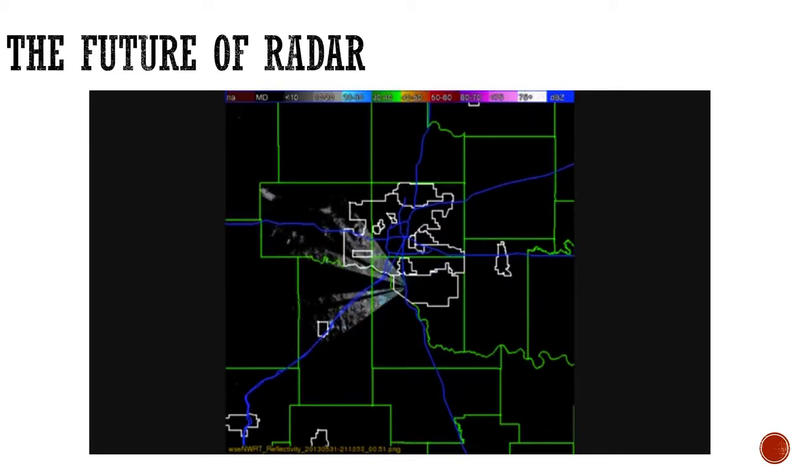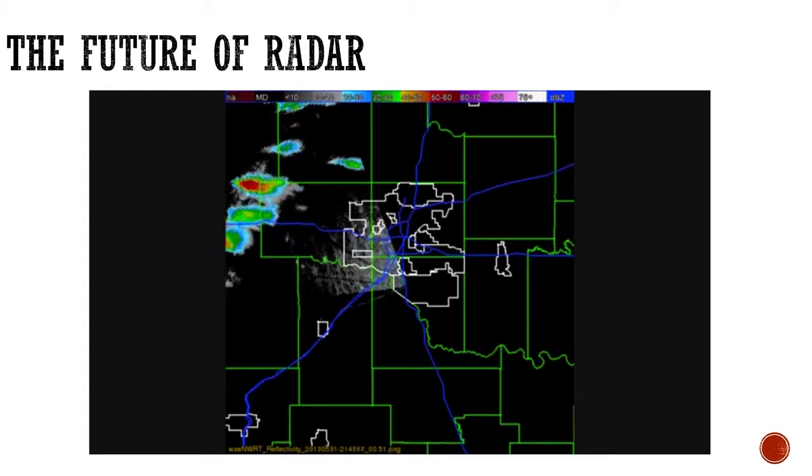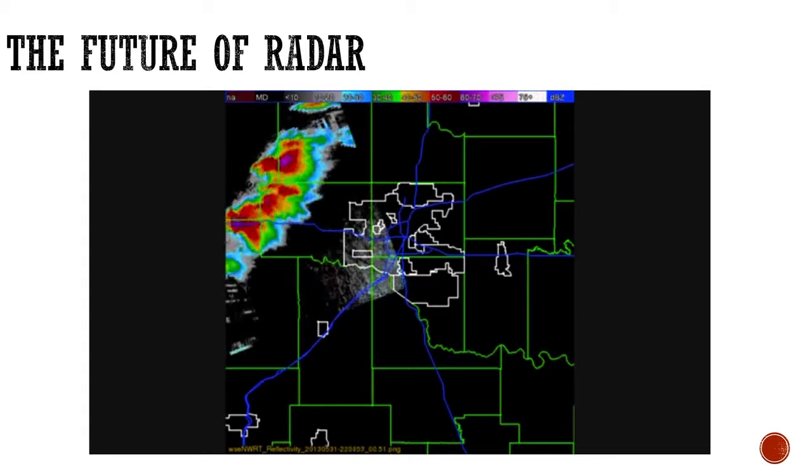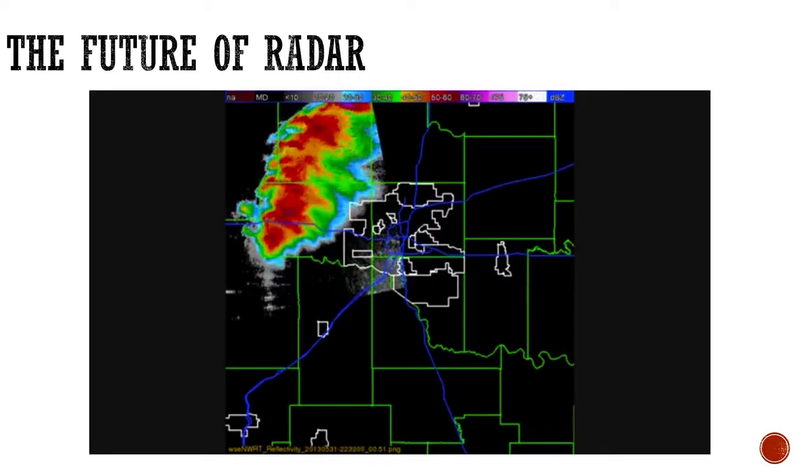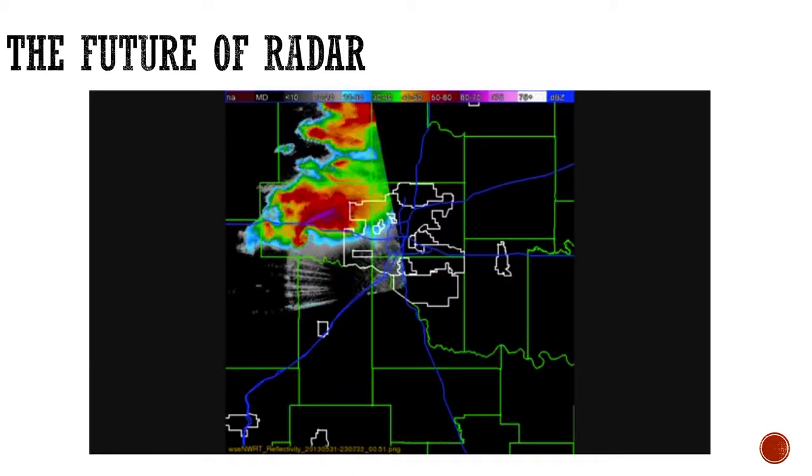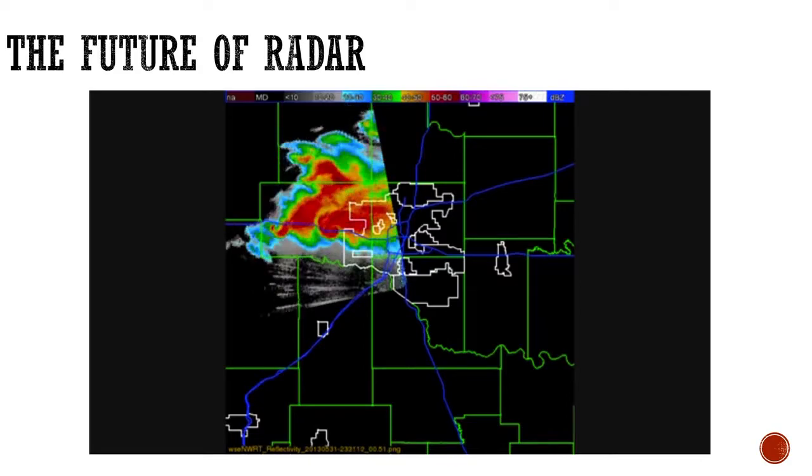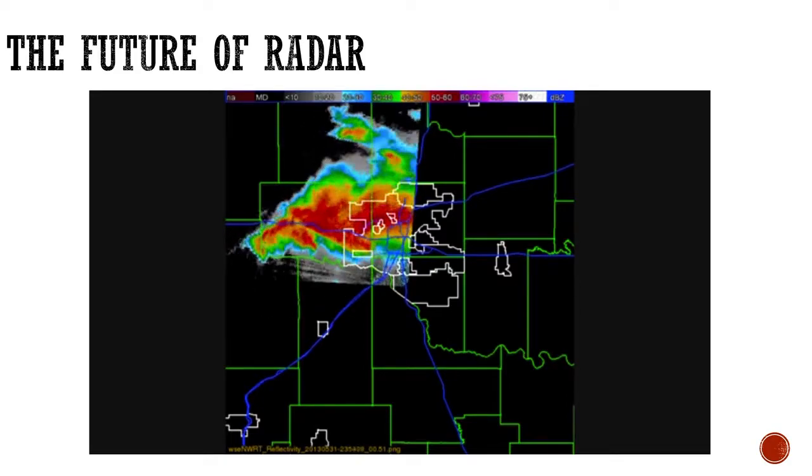This is actually an animation of the future of radar. So the current radar system that we have in place is almost 30 years old. It's using technology that's 30 years old, but we continue to upgrade it and make it better, like the dual polarization upgrade. Well, what you're looking at here is the next phase, the next generation of radar, which is called Phased Array.